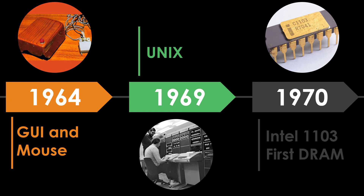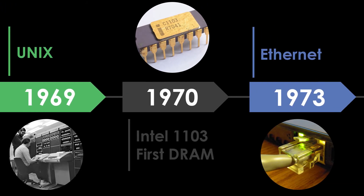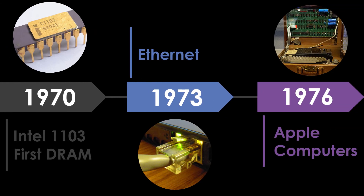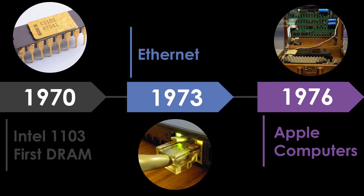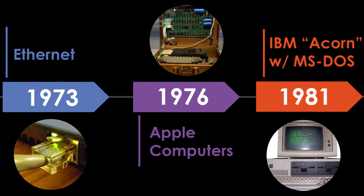In 1969, Unix was developed by a developer from Bell Labs. In 1970, a newly formed Intel unveils the Intel 1103, the first dynamic access memory chip. In 1973, Robert Metcalfe, a member of the research staff for Xerox, develops Ethernet for connecting multiple computers and other hardware.